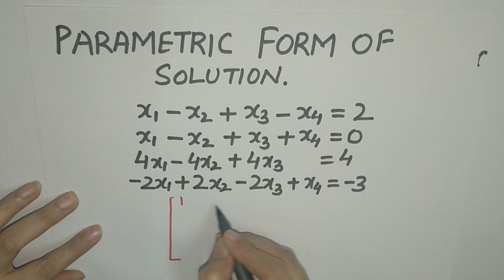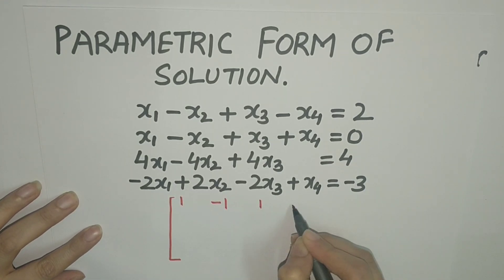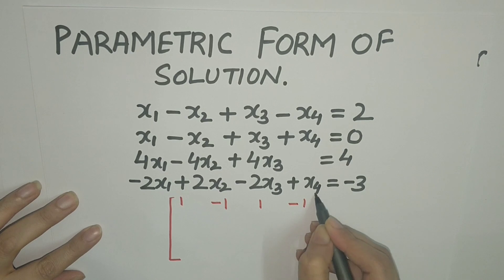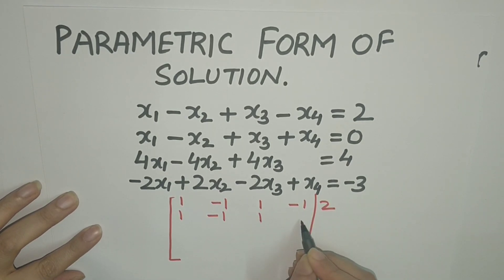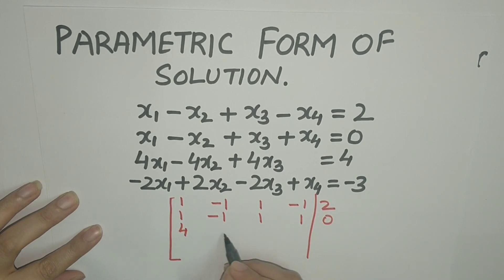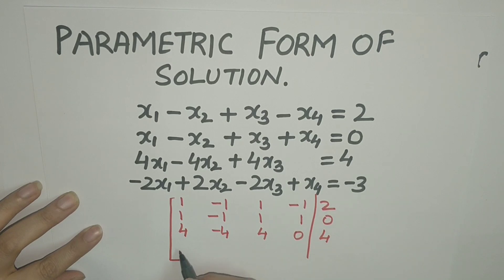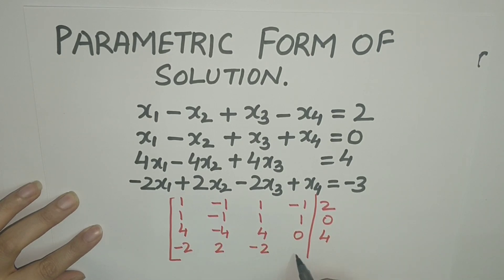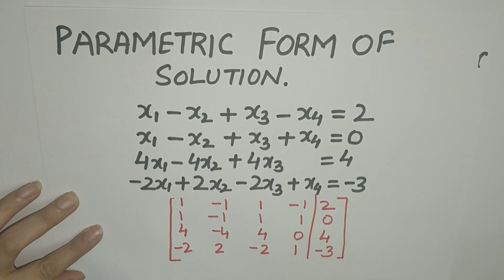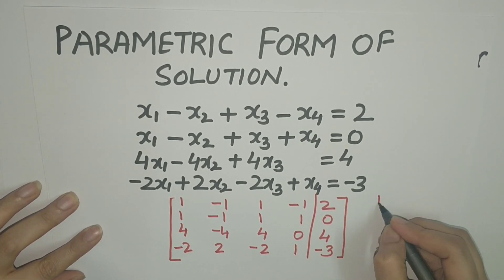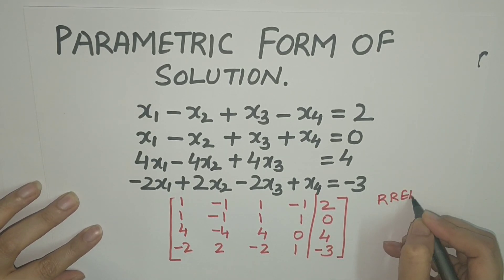The augmented matrix corresponding to this system is [1, -1, 1, -1, 2 / 1, -1, 1, 1, 0 / 4, -4, 4, 0, 4 / -2, 2, -2, 1, -3]. Let us now reduce it to reduced row echelon form.